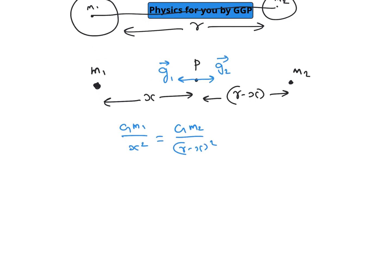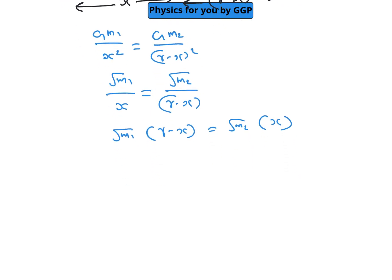Taking the square root on both sides, we get the square root of m1 divided by x equals the square root of m2 divided by (r minus x). Rearranging, root of m1 times (r minus x) equals root of m2 times x. Expanding: root of m1 times r minus root of m1 times x equals root of m2 times x. So root of m1 times r equals (root of m1 plus root of m2) times x.